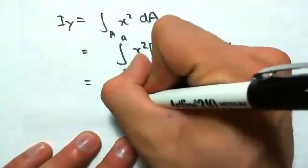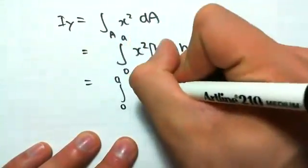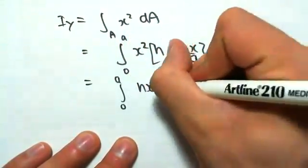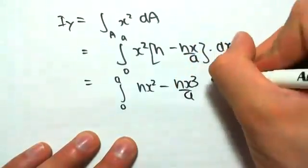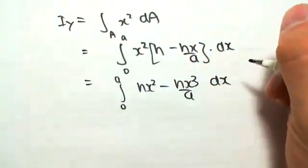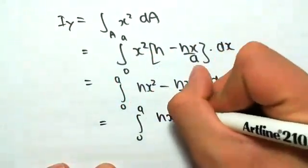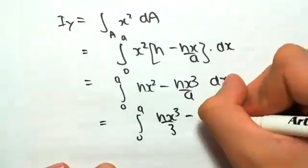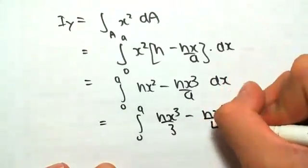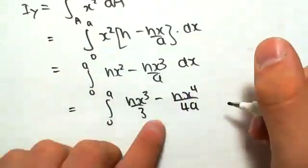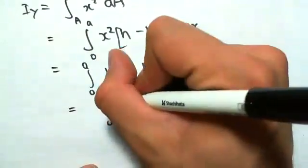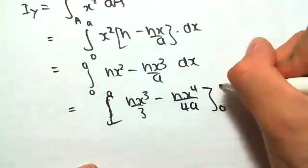Expanding this out, we would have 0 to a of hx squared, minus hx cubed on a, dx. Integrating for x, we would have hx cubed on 3, minus hx to the power of 4 on 4a,